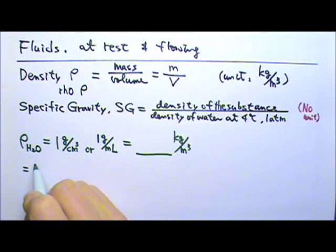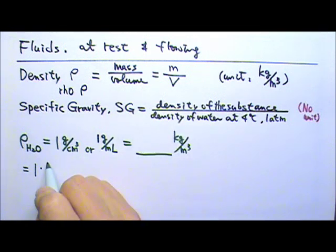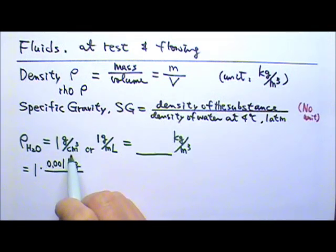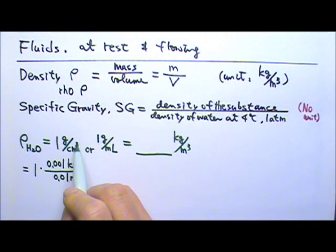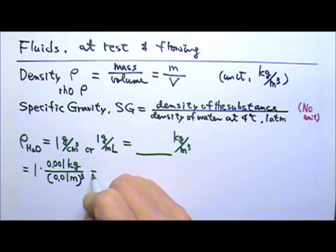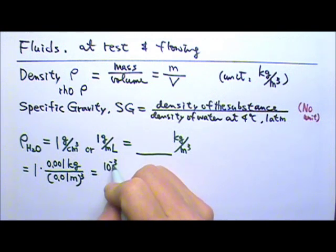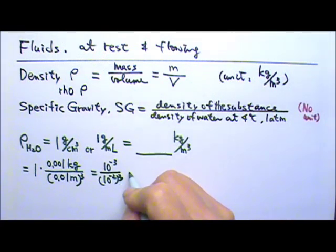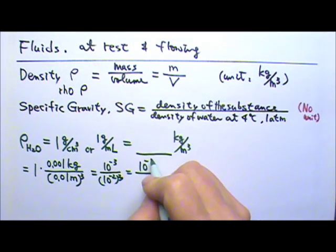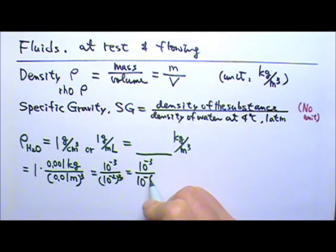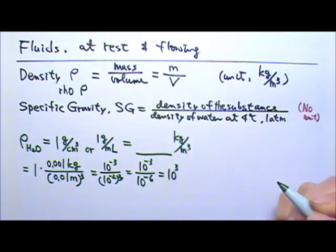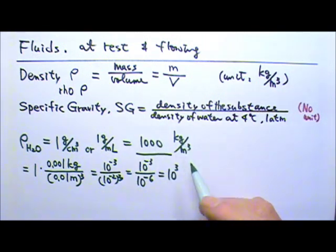To convert this unit, I'm going to first change the grams into kilograms. One gram is 0.001 kilograms. And then the centimeter has to become meters. And one centimeter is 0.01 meter. And because I have to cube the centimeter, I have to cube this whole thing. So this gives me, the top here is 10 to the negative third. Down here it's 10 to the negative second cubed. So this gives me 10 to the negative 3 divided by 10 to the negative 6, which gives me 10 to the third. So it's 1,000 kilograms per meter cubed.